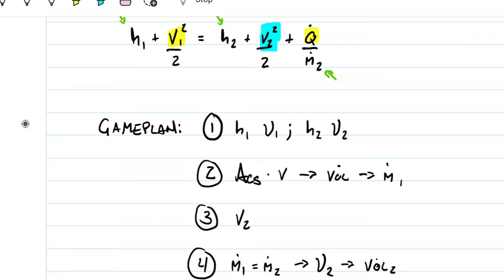So that's the game plan: first, define the two states, grab enthalpy and specific volume for both, and then once we've done that we should be good to go with step two.